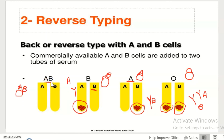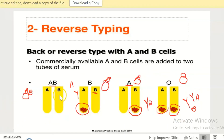So you have to think in reverse. If you see agglutination in A, the patient's blood group is B. In forward grouping, if you see agglutination in A, the patient's blood group is A; if in B, it is B; if in both A and B, it is AB; and if you don't see agglutination in either A or B, the blood group is O. So reverse grouping is the opposite of forward grouping.